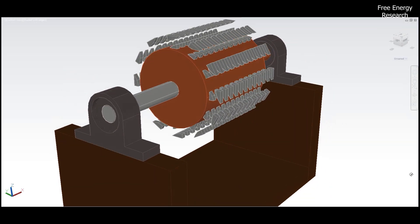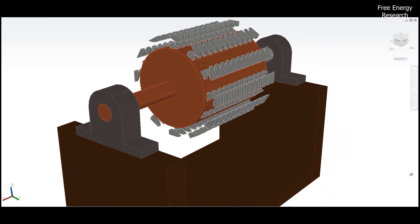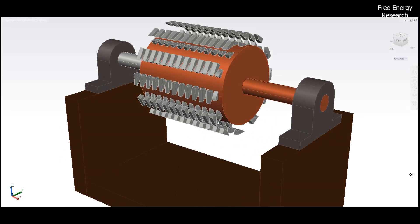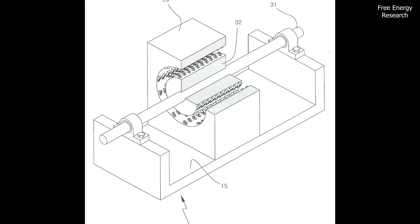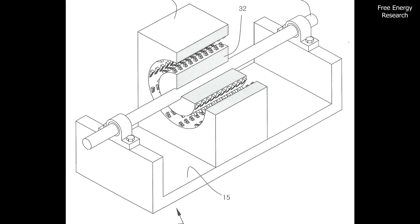But the innovation doesn't stop there. The Kong Chil-Ho Magnetic Motor is designed with practicality. The magnetic bodies are inclined at a predetermined angle, optimizing the repulsive force for maximum efficiency.